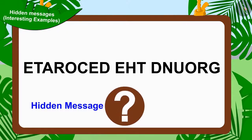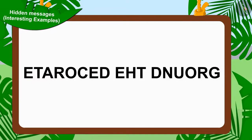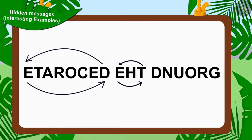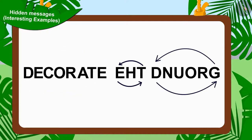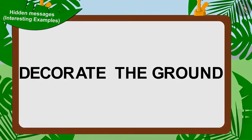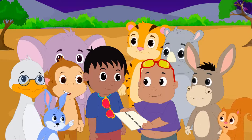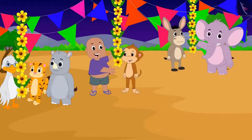If you want, you can find the answer by stopping the video. Well done kids, your answer is absolutely correct. In this hidden message of Jeev's, the alphabets of the words are written in reverse order. Jeev's second hidden message is 'Decorate the ground.' This time, Bunni solved Jeev's hidden message and read it to all the villagers. All the villagers decorated the ground with all their heart.